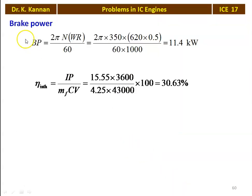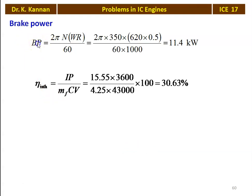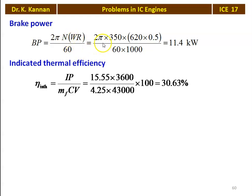We calculate the brake power: BP = 2πNT/60, where torque T = W × R. So BP = 2π × N × W × R / 60. Substituting: 2π × 350 × 620 × 0.5 (radius of the brake drum) / (60 × 1000) = 11.4 kilowatts.